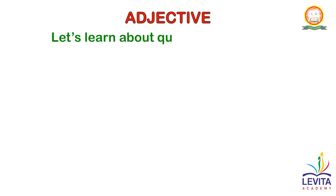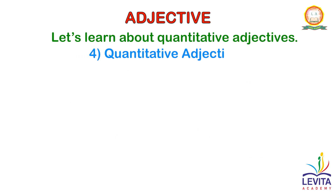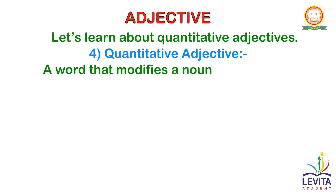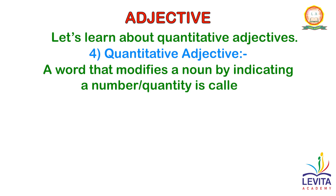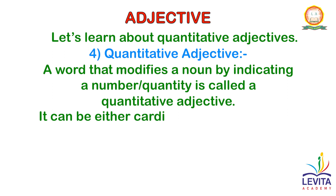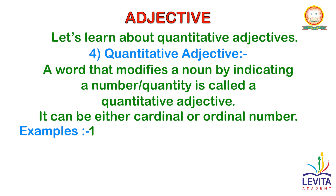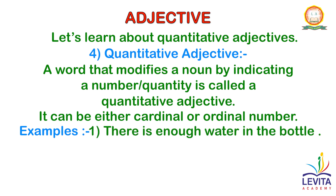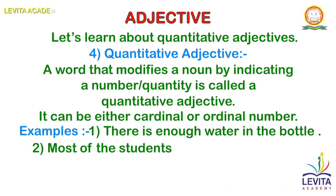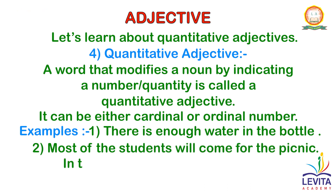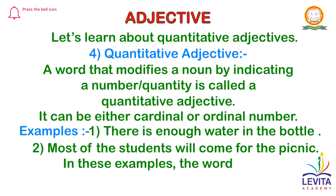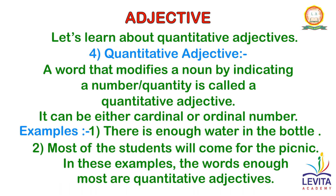Let us learn about quantitative adjectives. A word that modifies a noun by indicating a number or quantity is called a quantitative adjective. It can be either a cardinal or ordinal number. Examples: There is enough water in the bottle. Most of the students will come for the picnic. In these examples, the words enough and most are quantitative adjectives.